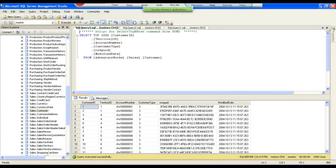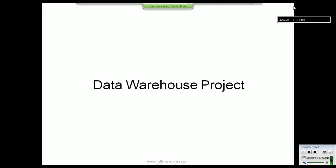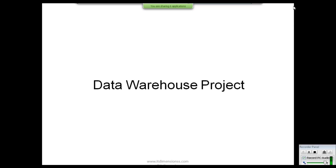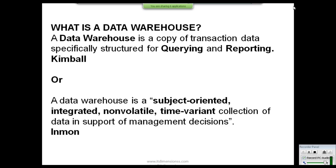A data warehouse is a data storing system used to store data effectively. You now have an idea of a database: its tables, subject areas, and how a database stores data in a two-dimensional table with rows and columns. A data warehouse is basically a database, but it contains a lot more data in a more organized way compared to a regular database.